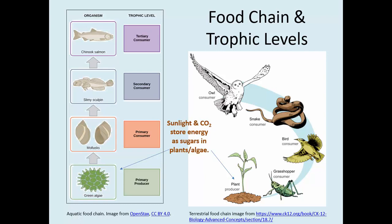Food chains are simply the way we represent the transfer of energy from one organism to another as you travel up the trophic levels of different ecosystems. There are two different food chains on this slide. The first one is an aquatic food chain, where algae is the primary producer — taking in energy from the sun and carbon dioxide and converting it into sugars. Algae is consumed by mollusks, some of that energy transfers to the mollusk, which is then consumed by the slimy sculpin, and finally the Chinook salmon eats the slimy sculpin. So energy is transferred up this food chain from producers all the way up to the tertiary consumers.